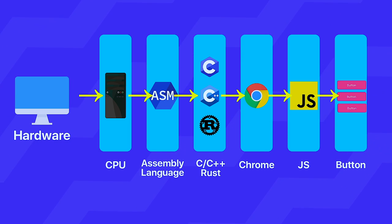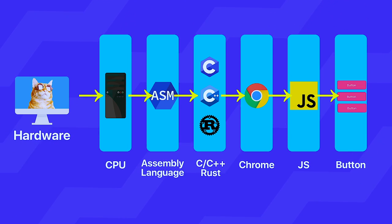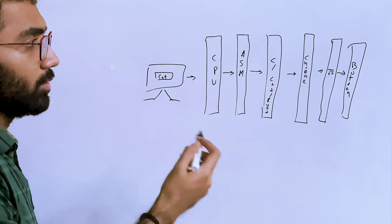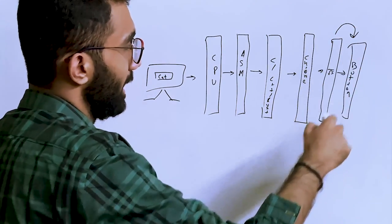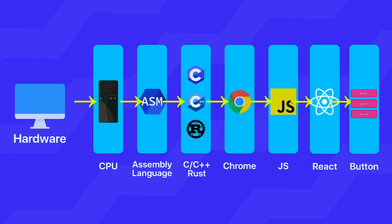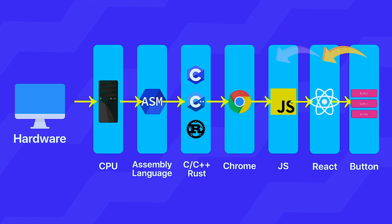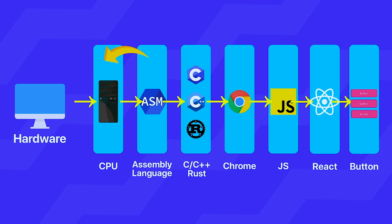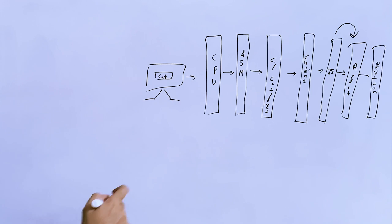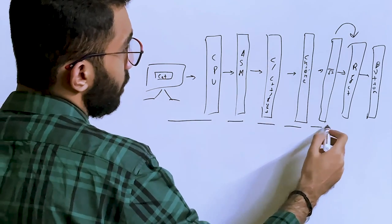Whatever UI you create has to go through so many abstractions just to render a button on screen. When you use a framework, you're adding another abstraction on top. JSX in React transfers to JavaScript, which Chrome uses to draw on screen using Windows or Mac APIs, which are written in C/C++, down to assembly, the CPU, and finally the monitor.